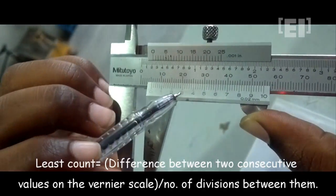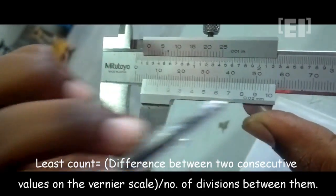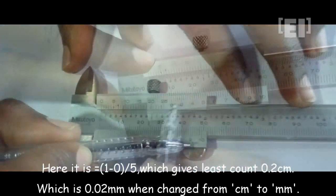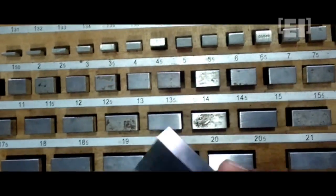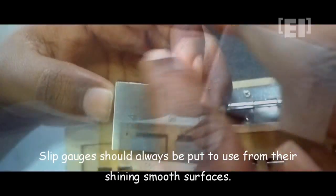The least count of the vernier scale is 0.02 mm, which will be used in calculations later. To get the least count, just divide the difference between two consecutive values on the vernier scale by the number of divisions between them.